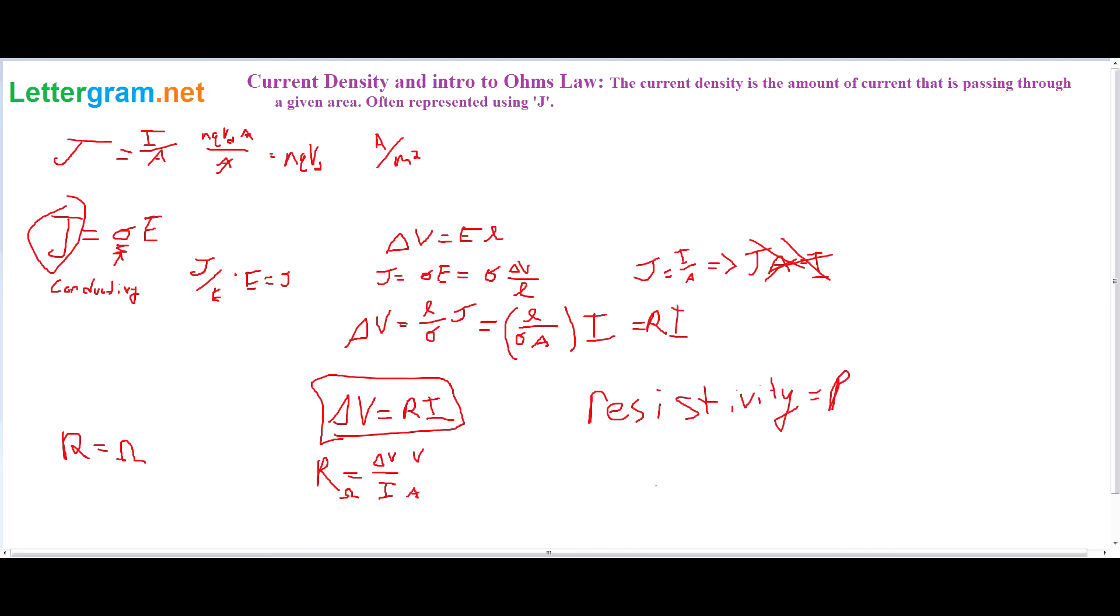Resistivity is equal to this rho right here. And rho is equal to 1 divided by the conductivity, which is a constant. And it will be the same in like a copper wire for all copper wires roughly, depending how pure it is, and gold and silver and most metals.